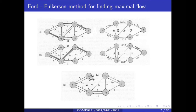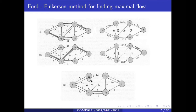For example, from S you can reach V1, from V1 you can reach V2, from V2 you can reach V4, but there you are stuck — no outgoing links — so this will not work. There is no pipe in the proper direction and that was essentially the only way out. Once there are no more augmenting paths, you stop.